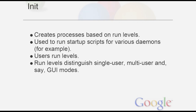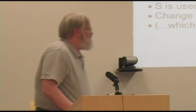The init program has the concept of a run level — everything it does to start up a system is based on determining the current run level. A run level is just a number, typically ranging from zero to six, distinguishing things like single-user mode, multi-user mode, whether to load a GUI like GNOME, and whether to shut down.